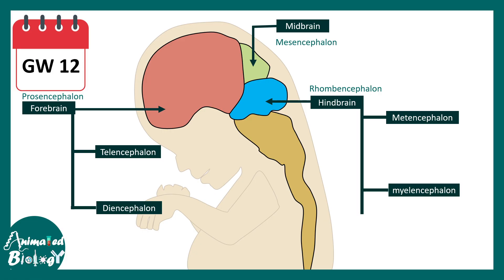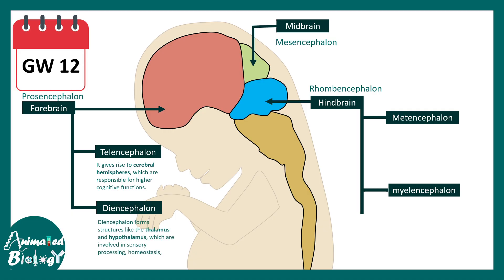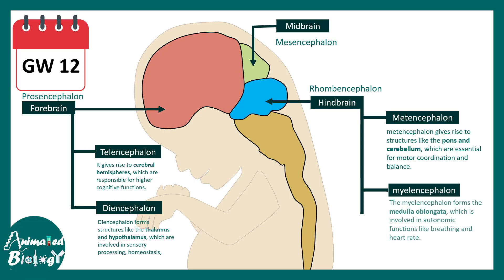At around gestational week 12, the telencephalon gives rise to the cerebral hemispheres, responsible for higher cognitive processing and function. The diencephalon forms structures like the thalamus and hypothalamus, involved in sensory processing and homeostasis. The metencephalon gives rise to the pons and cerebellum, essential for motor coordination and balance. The myelencephalon gives rise to the medulla oblongata, involved in autonomic functions like breathing and heart rate control.